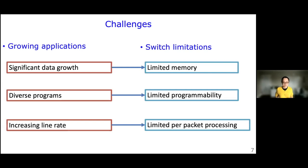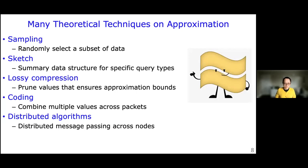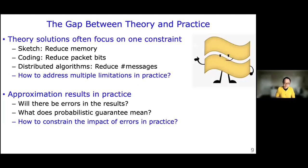In this talk I'll try to fundamentally address this tension by borrowing ideas from the theory community. There are many theory techniques designed to solve resource and programming constraints. For example, we may be familiar with sampling and sketches — sketches are compact summary data structures to answer specific queries. There are also techniques like lossy compression, coding, and distributed algorithms that design message-passing protocols across nodes to coordinate them. It would be great to use this rich set of theory ideas and data structures in practical programmable data planes. But there's a fundamental gap between theory and practice.